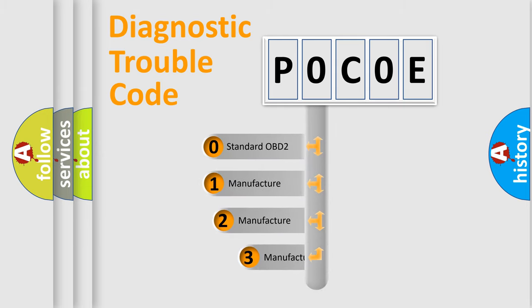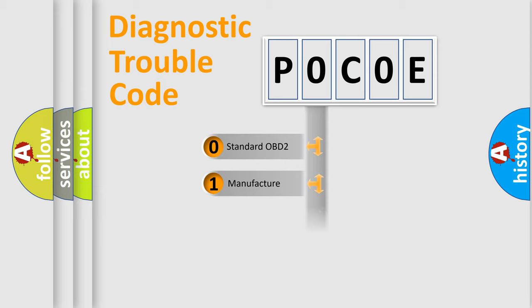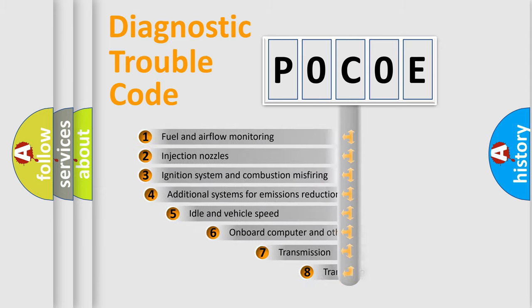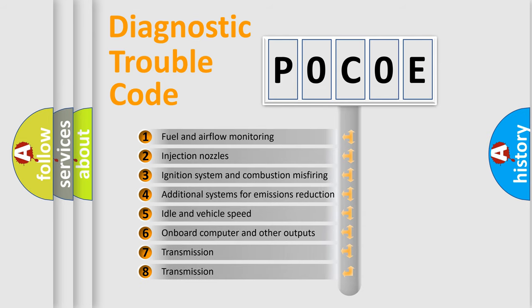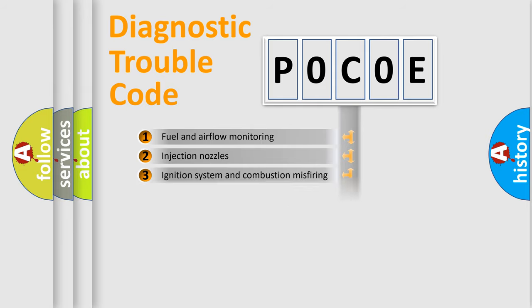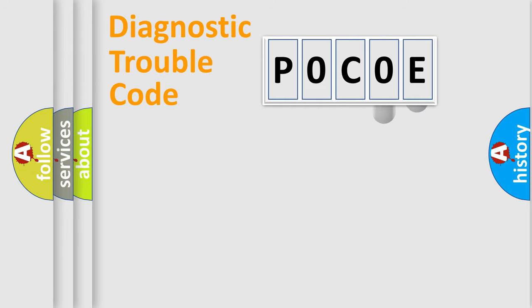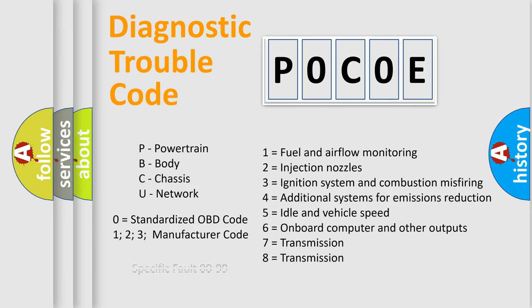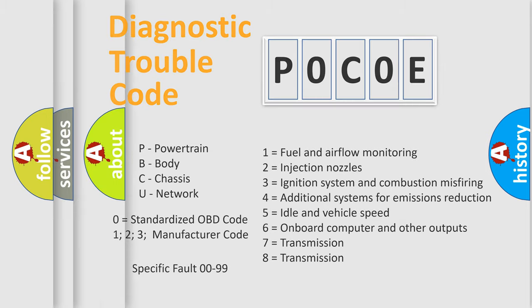If the second character is expressed as zero, it is a standardized error. In the case of numbers 1, 2, or 3, it is a more specific expression of a car-specific error. The third character specifies a subset of errors. This distribution is valid only for the standardized DTC code, and only the last two characters define the specific fault of the group. This division is valid only if the second character code is expressed by the number zero.